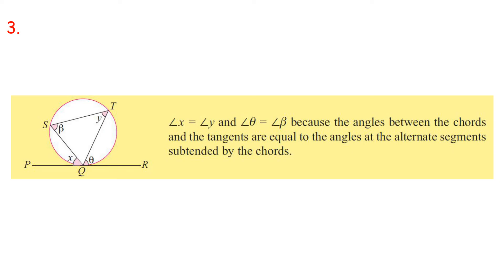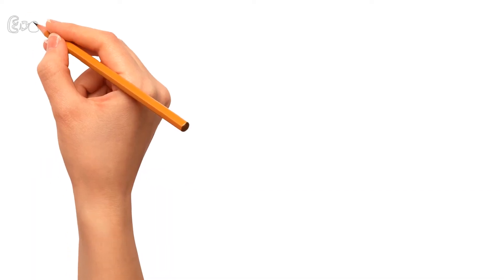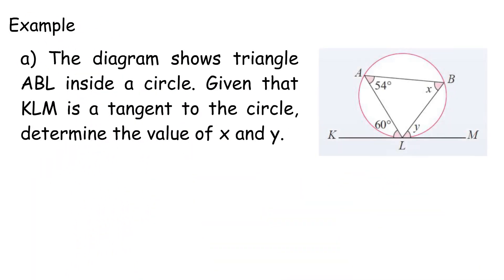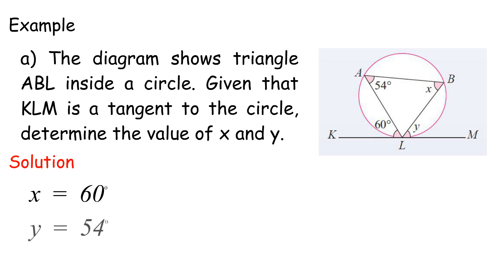Example A: The diagram shows triangle ABL inside a circle. Given that KLM is a tangent to the circle, determine the value of X and Y. X equals 60 degrees — angle in the alternate segment of Angle KLA, subtended by chord AL. Y equals 54 degrees.